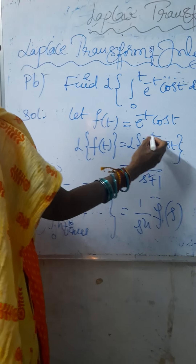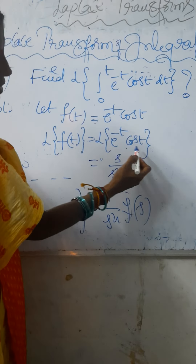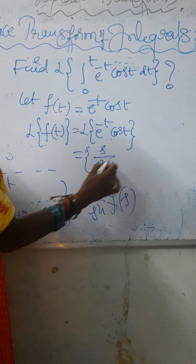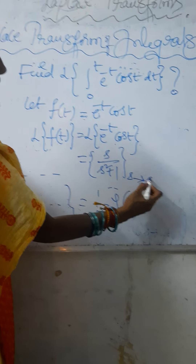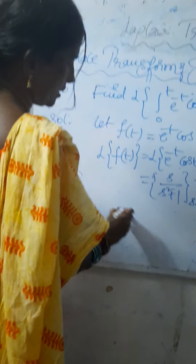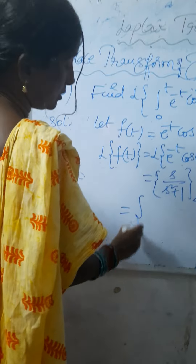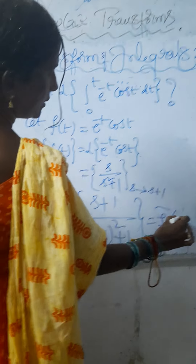And then, before e to the power minus t is there. Laplace transform of e to the power minus t cos t — this is the first shifting theorem. Here, in place of s, s tends to s plus 1. So we have to write s plus 1. That gives s plus 1 by s plus 1 whole square plus 1. This is f bar of s.